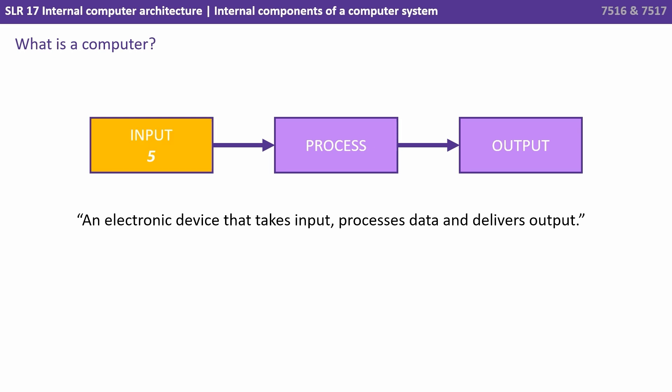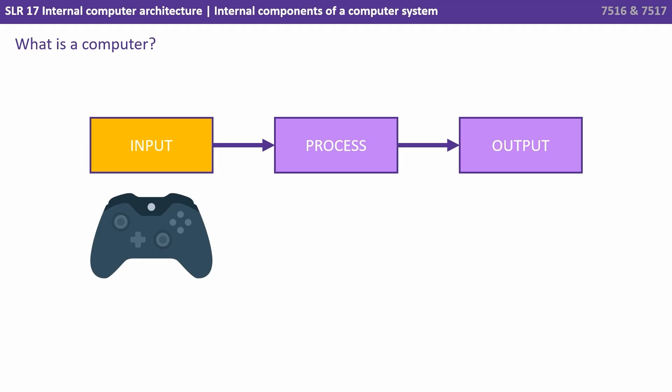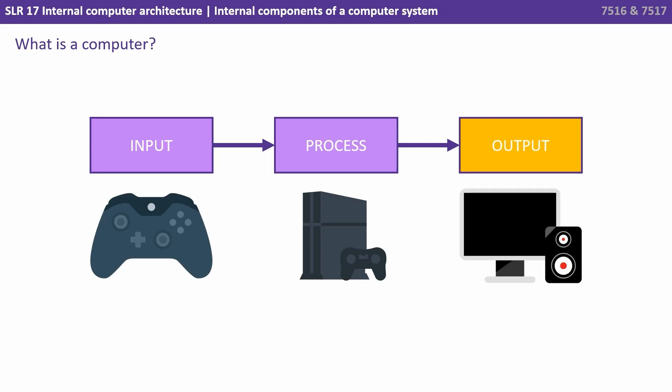Here we see the input is 5, the process is multiplied by 2, and the output is therefore 10. However, the input could just as easily be from a games console controller in the form of button presses. This is then processed by the graphics processing unit inside the machine and relayed as output in the form of visuals to the screen and audio through speakers.